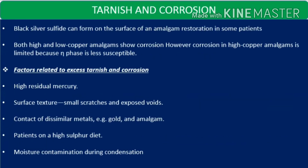The last property is tarnish and corrosion, basically due to the black silver sulphide formed on the surface of amalgam. Both high copper and low copper amalgams show corrosion, but corrosion in high copper amalgams is limited because the eta phase is less susceptible to corrosion.